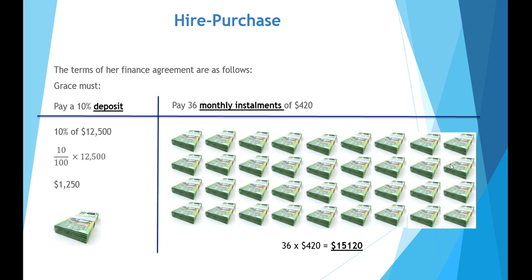Clearly, this arrangement is going to cost considerably more than the basic $12,500 that the sound system and stereo equipment is worth, and this is because there is a loan involved. The deposit comes off the price; however, the monthly installments well and truly outweigh the remaining $11,250 loan. In fact, the difference between the two gives you the amount of interest being charged. So you're paying for the privilege of having your product early.